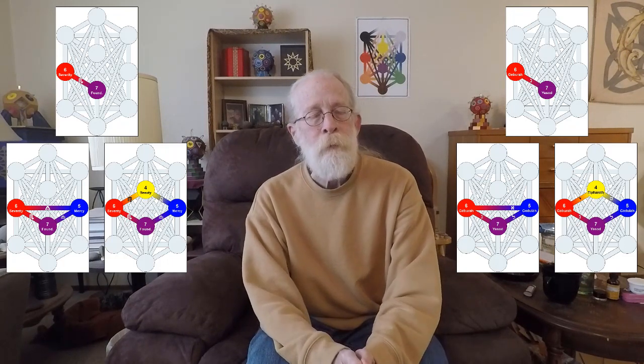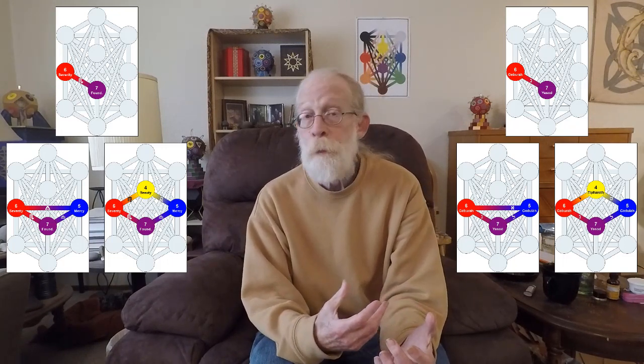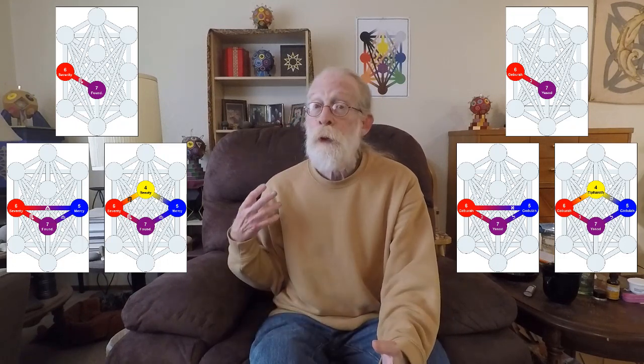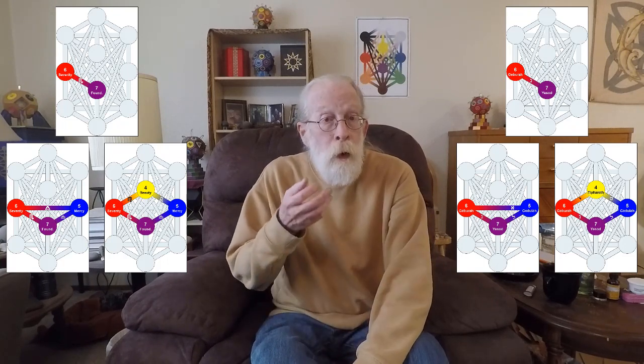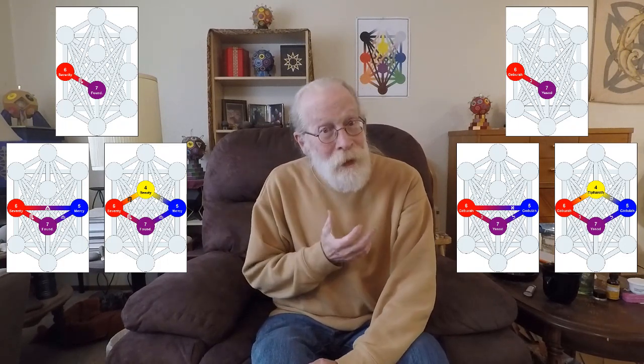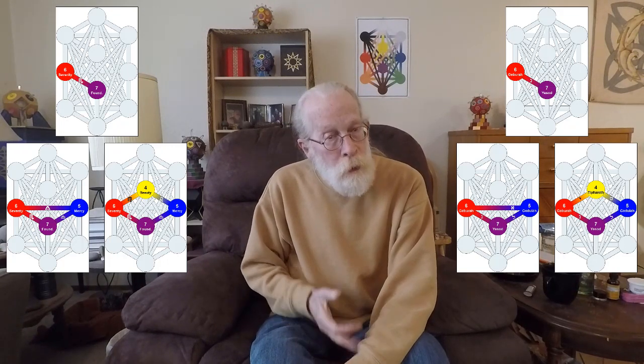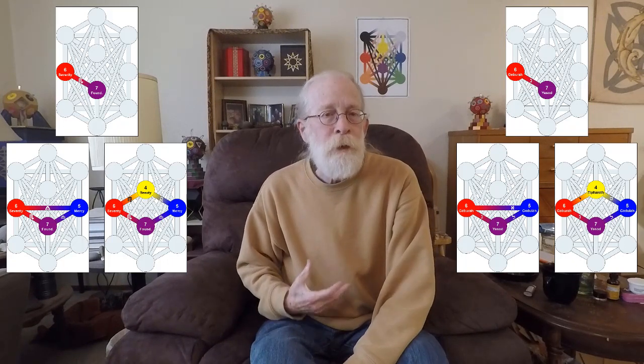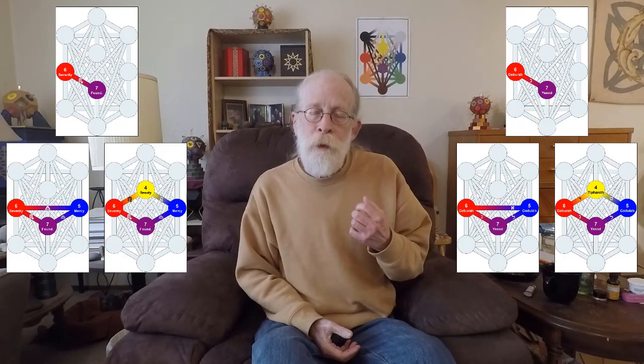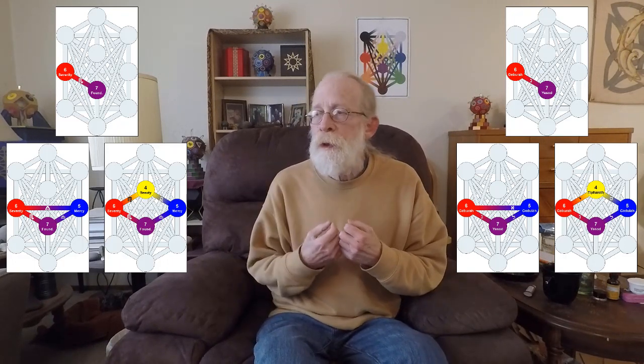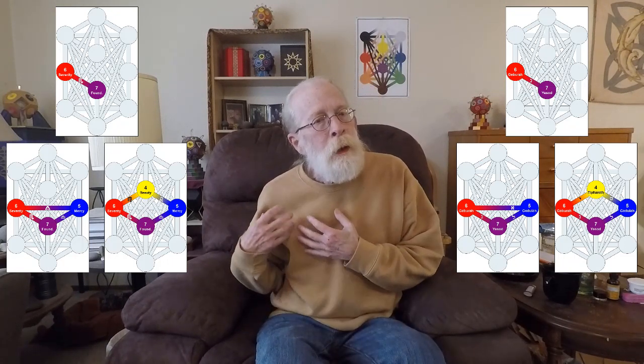And this one, this is the water sign path, the path of Scorpio. It comes from Gebura to Yesod. Tiferet, Yesod, and Malkuth, the three Sephiroth of the Pillar of Self below Kether, are each given birth to by a water sign.